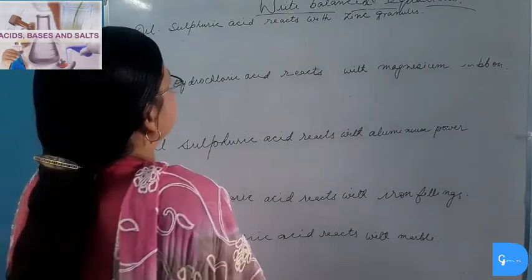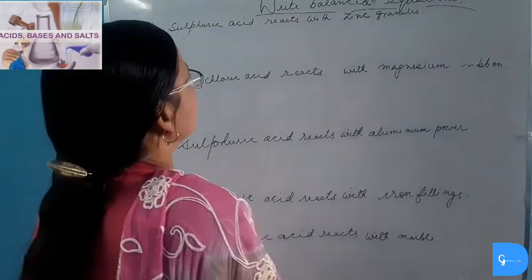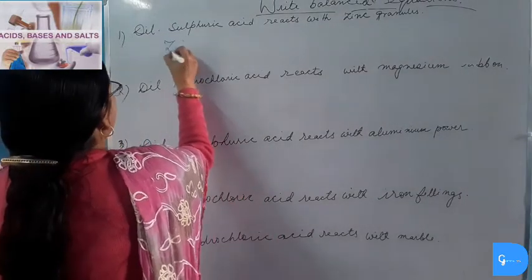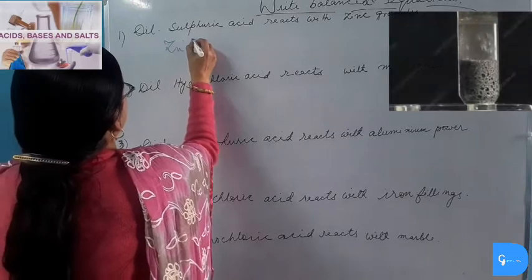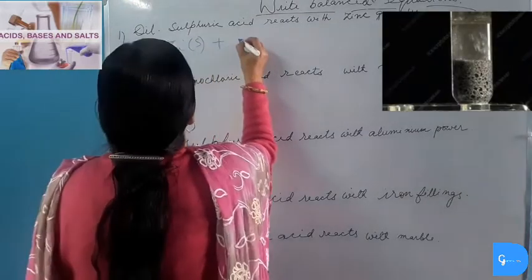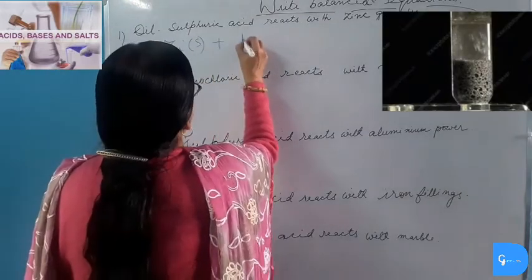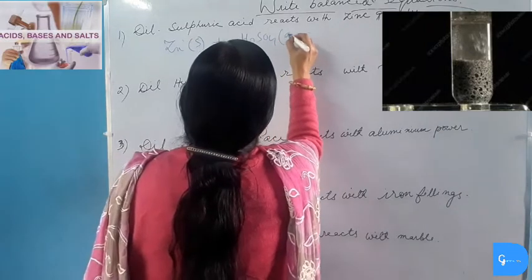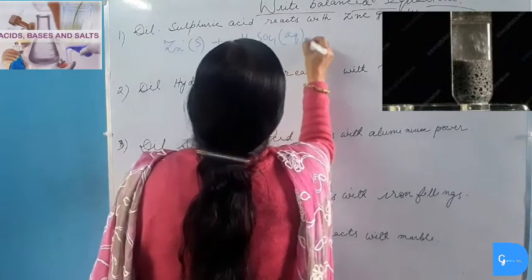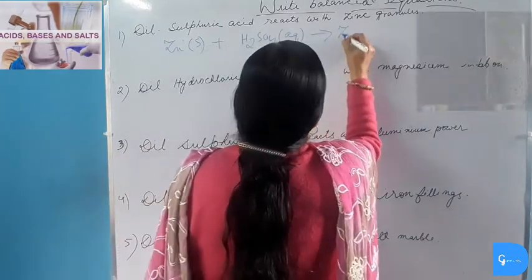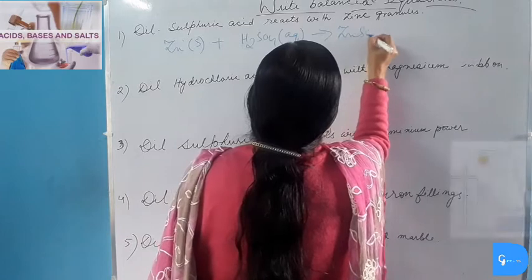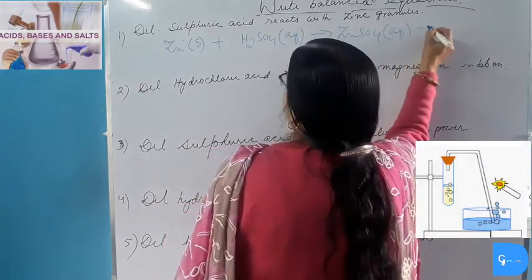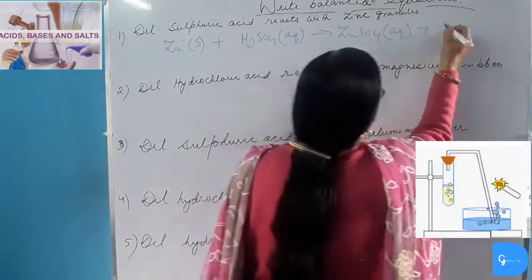When dilute Sulphuric Acid reacts with Zinc Granules (solid): Zn(s) + H₂SO₄(aq) → Zinc Sulphate (salt) plus Hydrogen gas.